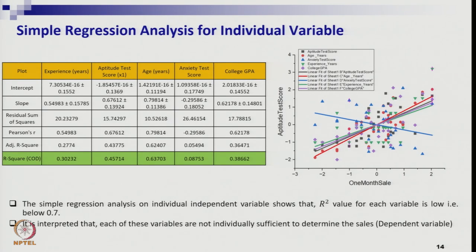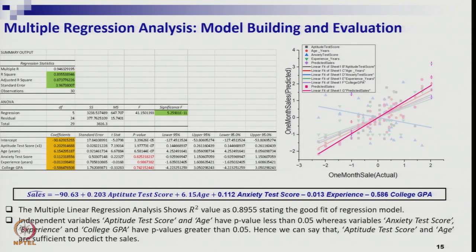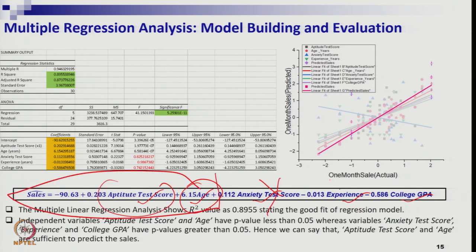So you cannot fit the regression line by including all five variables — aptitude test score, age, anxiety, experience, and college GPA. Only the significant ones should be selected. Looking at the results: age and aptitude test score are the two significant variables. These two are sufficient to set your regression line.